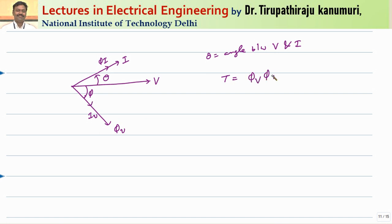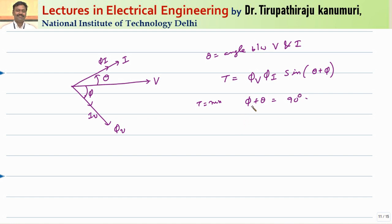This I can write as phi_v multiplied by phi_i multiplied by the sine of the angle between them. The sine of the angle between them will be equal to sine of theta plus phi. Now, it is designed in such a way that we want to get the maximum torque. The torque will be maximum when the value of phi plus theta will be equal to 90 degrees. The torque will be maximum when the value of phi plus theta is equal to 90 degrees. Corresponding to this maximum value - that means phi plus theta is equal to 90 degrees - I am representing here the maximum torque line.